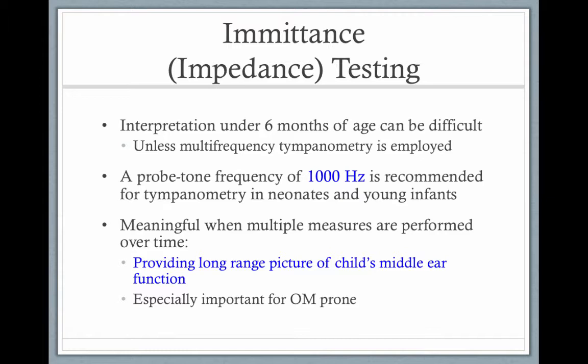This is a great test. You'll hear the expression 'type B tympanogram' or 'AS' — remember that means there's fluid in the middle ear, likely leading to a conductive hearing loss. Conductive hearing losses can resolve on their own or with PE tubes in the case of ear infections. However, we can't use this test on newborns, and that's why the middle ear is such a huge issue when doing newborn hearing screening.